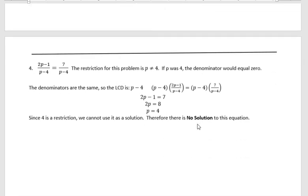The last one looks easy because it has the same denominator, and it is easy. When you have the same denominator, you could just strike those off right away and set your numerators equal to each other. But if you don't recognize that, that's fine. The restriction for this problem is p cannot be 4, because if p was 4, 4 minus 4 would be 0 and that would be undefined. So we are looking for anything that's not 4.